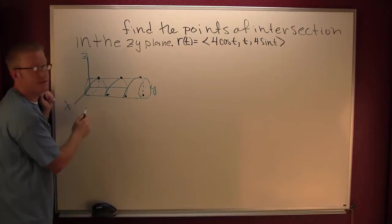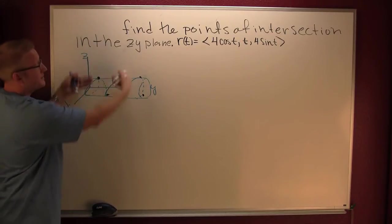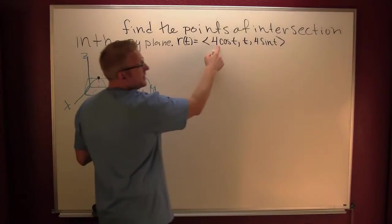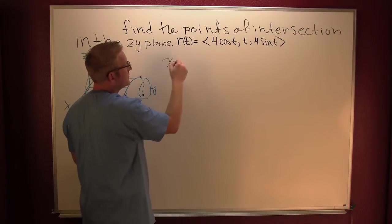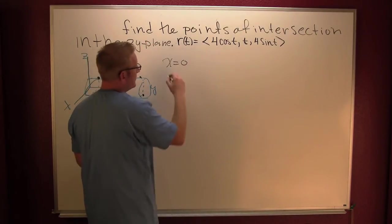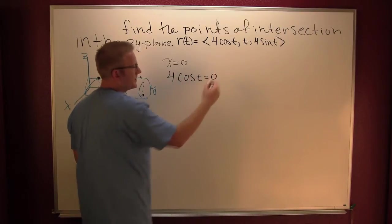We want to find the points where x is equal to zero. Why? Because if we have the zy-plane, x is zero. So we're going to look at that. If x is zero in the zy-plane, then 4 cosine t is equal to zero.